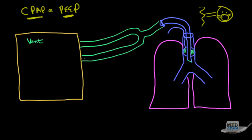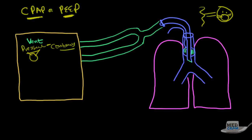So what is this mode of ventilation? You're not dialing in a specific volume. What you are dialing in is a pressure — and this pressure is continuous. It doesn't matter whether the patient is breathing in or breathing out; they're always getting the same amount of pressure.